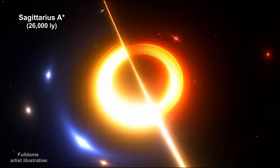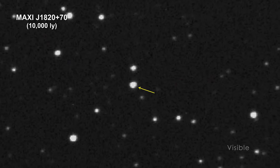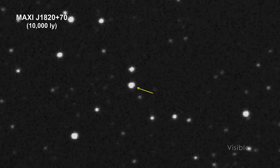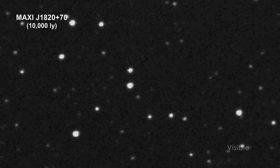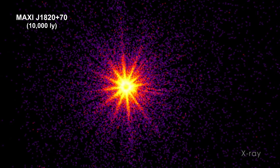Sag A star is a supermassive black hole. In March 2018, the Japanese instrument MAXI, aboard the International Space Station, recorded an extremely strong X-ray outburst.